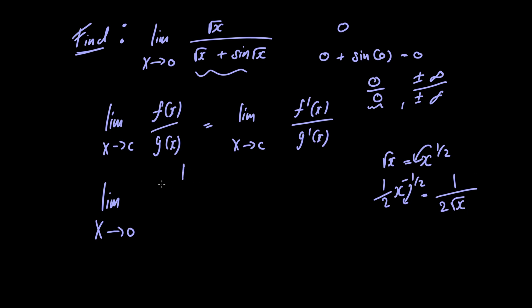In the numerator we have 1/(2√x), and in the denominator we also have 1/(2√x). To take the derivative of sin(√x), we need to use the chain rule.